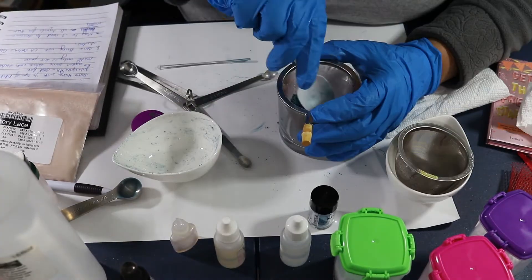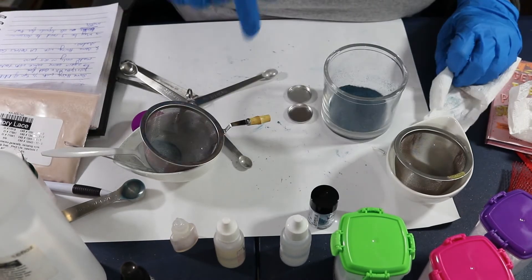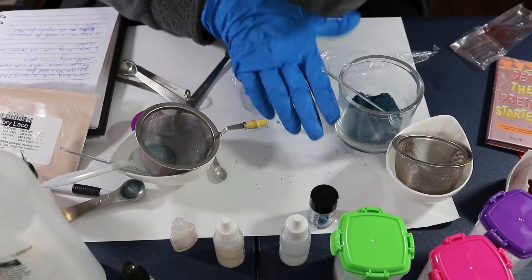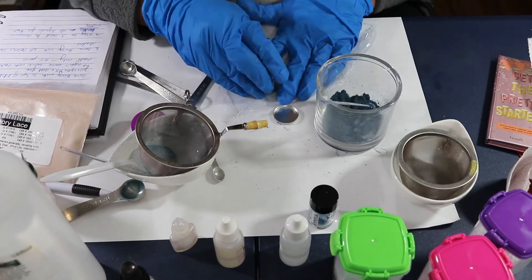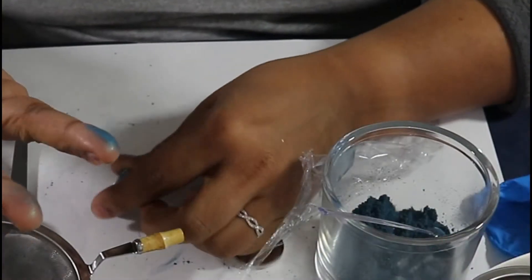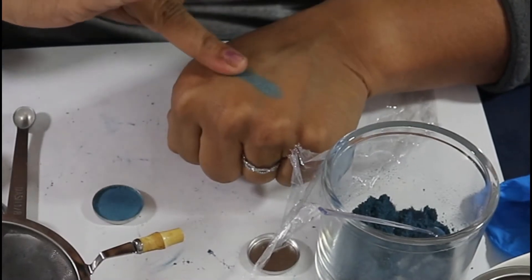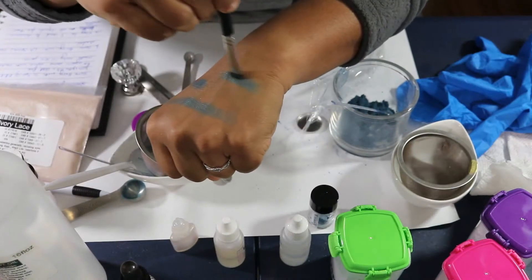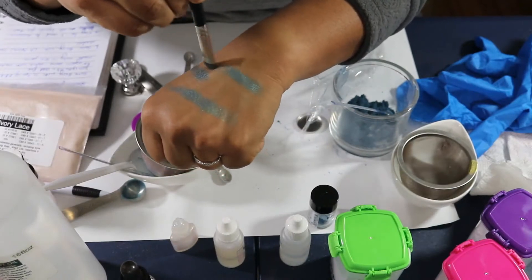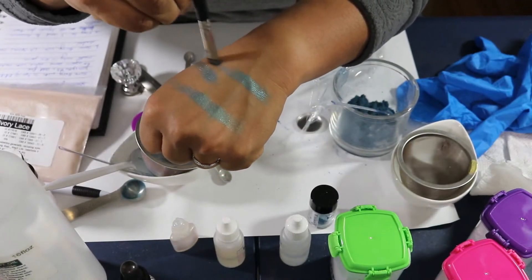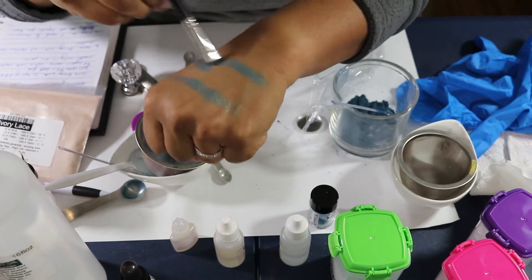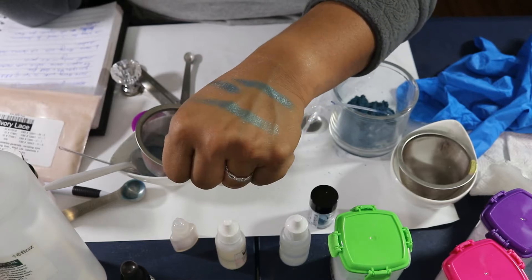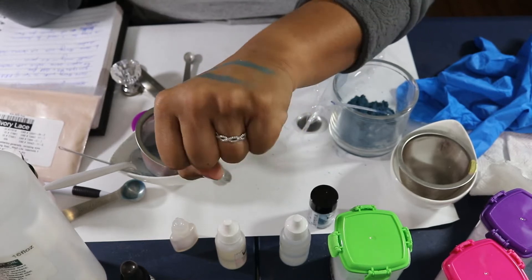Let's pass this through the sieve and press. Somehow this looks darker than a pan that I had pressed before with this pigment.